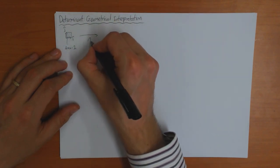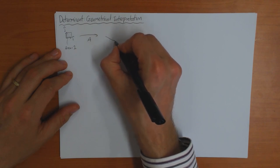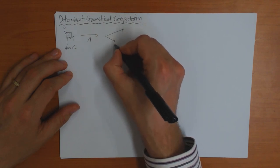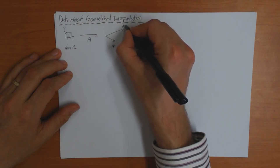But if you apply a matrix A to these vectors, then you get two new vectors like this. So this one is A applied to i, and this one is A applied to j.